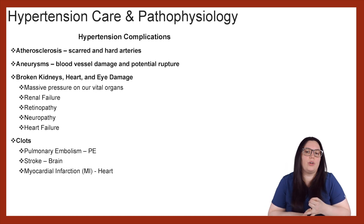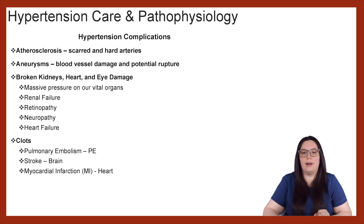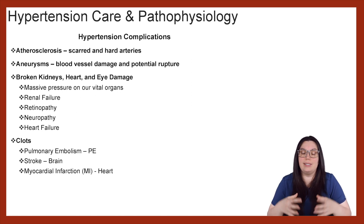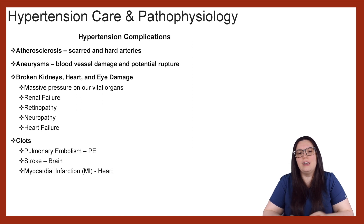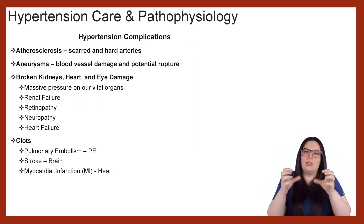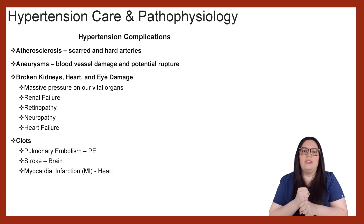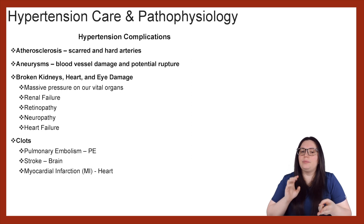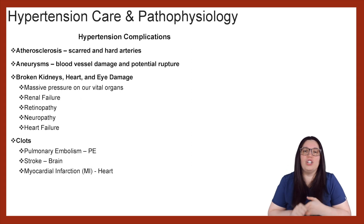Broken kidneys, broken heart, and eye damage are also complications. We talked about before how with late signs of hypertension you're absolutely going to start to develop some kind of end organ damage. This hypertension is clamping down on these arteries, causing massive pressure on your vital organs. So you're going to start to see renal failure, retinopathy when it comes to your eyes, neuropathy, as well as heart failure.